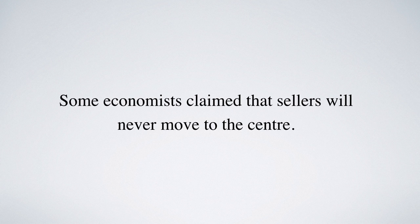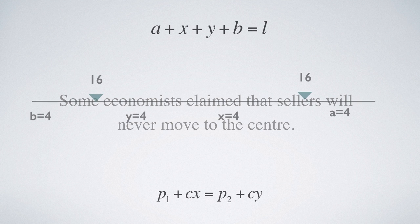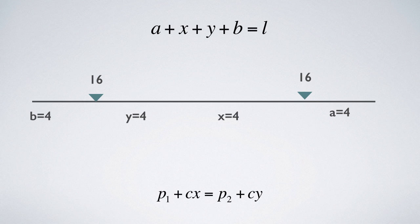Some economists claim that sellers will never move to the center, which includes city center. This is the hotel equilibrium. When seller 2 moves to the equal distance as seller 1, they both enjoy the profits of 128.